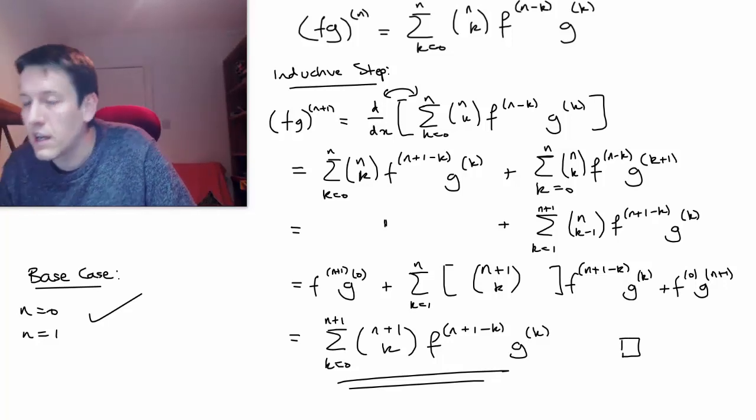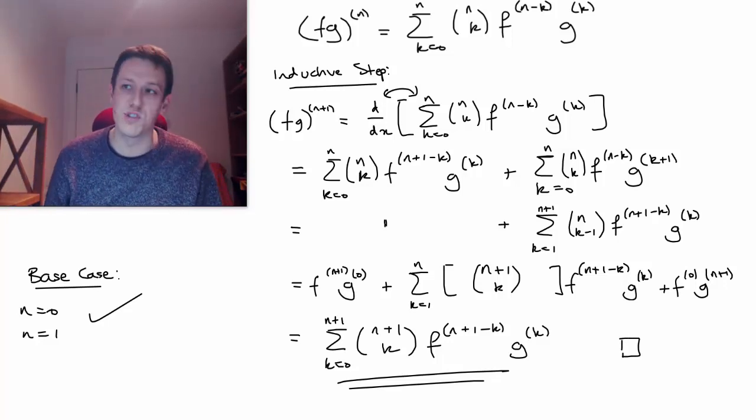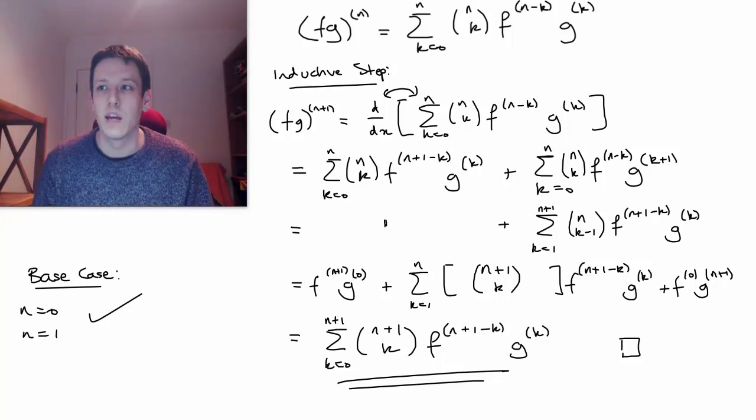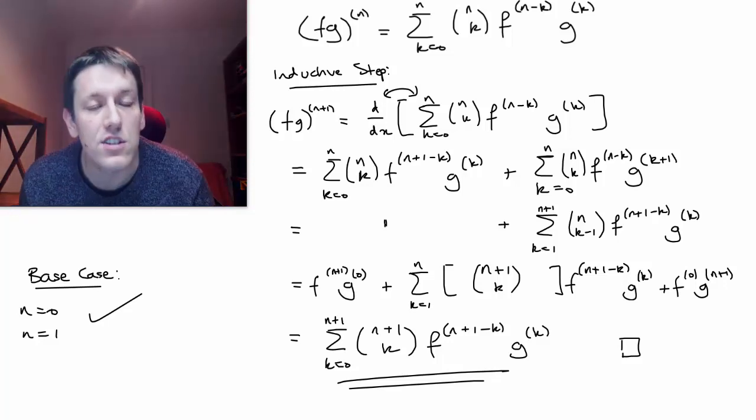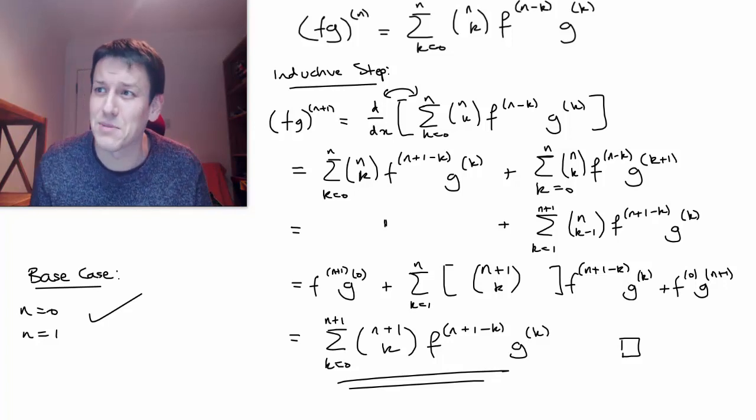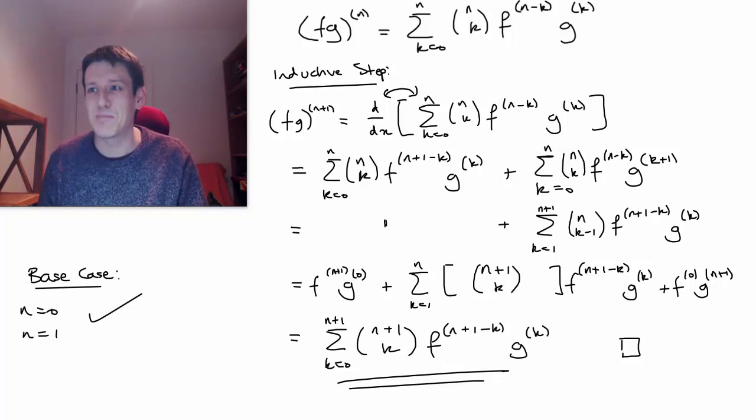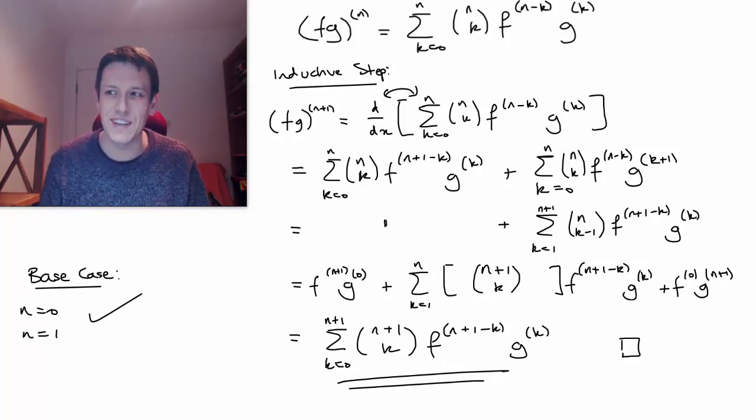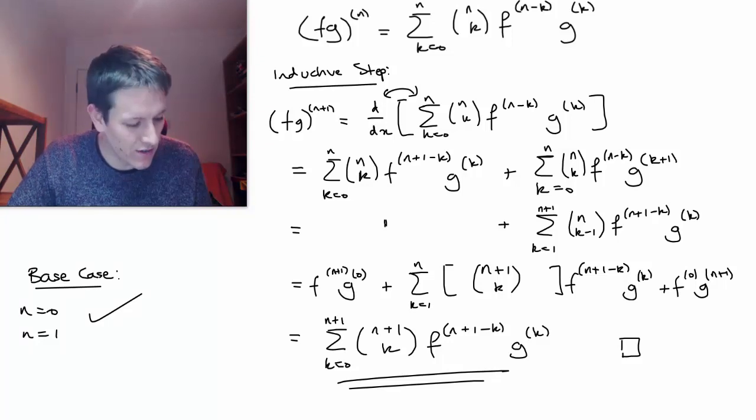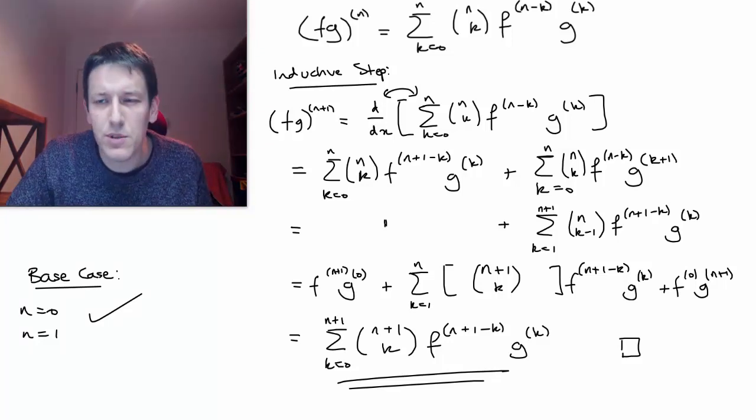Okay, so we've proved by induction that this general Leibniz rule that we showed in some examples in the previous video really does hold for any integer value of n. So I hope that was useful, a bit more advanced than some of the videos that I've put up previously. So if you're watching this as a GCSE student or an A-level student even when you're finding this stuff, then be patient, go and do maths at university, and you'll be doing this sort of stuff in no time. Okay, let me know in the comments if you've got any questions or anything else you want me to do. And I will see you in the next video.